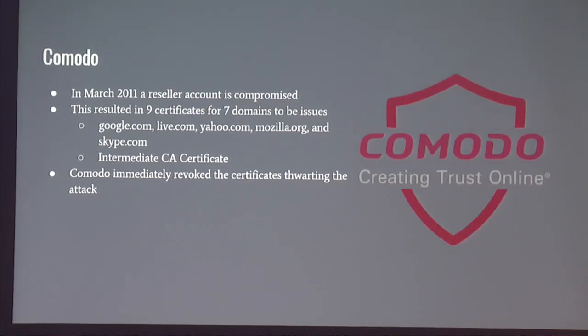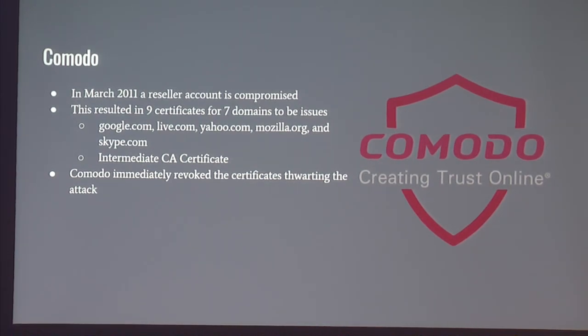Now a little bit about what happens if a certificate authority misbehaves, and there are some recent examples of this. In March of 2011, Comodo, at the time a popular reseller of certificates, was compromised. Nine certificates for seven different domain names were issued, including Google, Live (which is Microsoft), Yahoo, Mozilla, Skype, and others, including subdomains and wildcards, and an intermediate CA certificate so you can create more certificates for these domain names with the certificate that was leaked. Comodo immediately revoked the certificates that were issued, basically thwarting the attack.